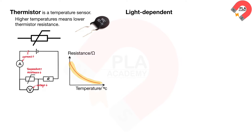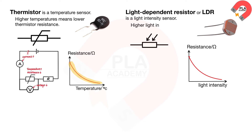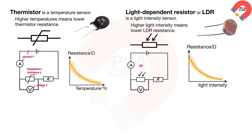A light-dependent resistor, or LDR, is a light intensity sensor. This is the symbol of a light-dependent resistor. Higher light intensity means lower LDR resistance. For the circuit diagram, when the light intensity increases, the LDR's resistance decreases, causing the current from the battery to increase and the voltage across the LDR to decrease.